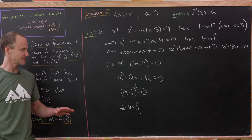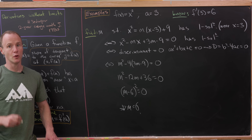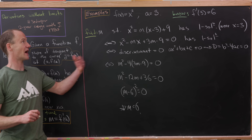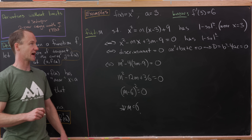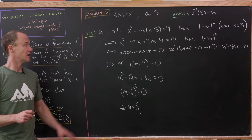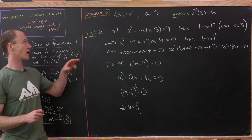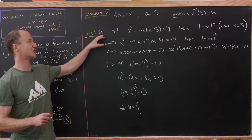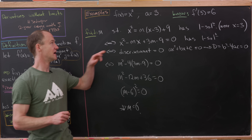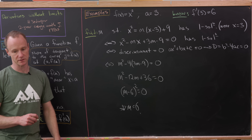So it seems like at the point 3, we can find the derivative of f of x equals x squared using this method — simply imposing the condition that m must satisfy the rule that the equation has one solution.